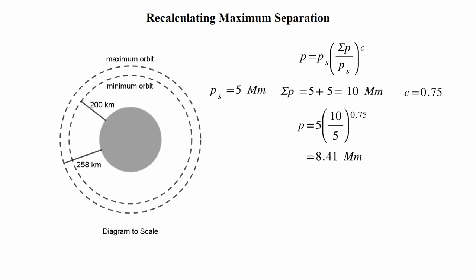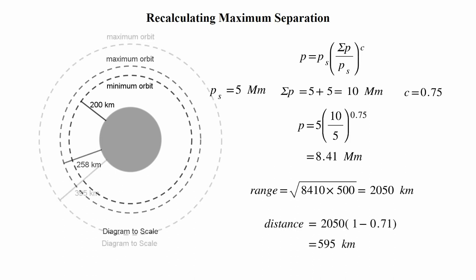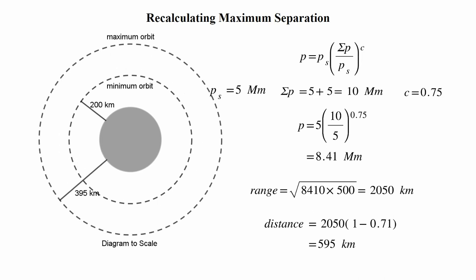This now ups our communication range with the Communitron 16 from 1581 to 2050 kilometers. Going back to our max distance calculation with this new range, now gets a maximum separation and orbital radius of 595 kilometers, which is an altitude of 395 kilometers. Now this is better.